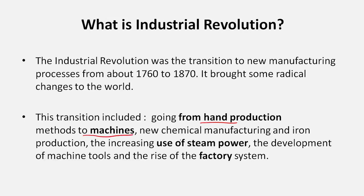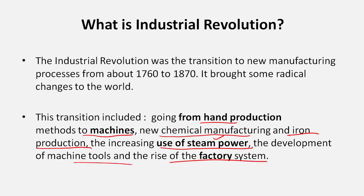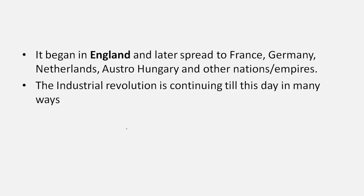During the Industrial Revolution, machines started to be used for production. New chemical manufacturing processes were started, new chemicals were developed, and science and technology took great strides. Iron production started commercially, there was an increase in the use of steam power, development of machine tools, and the rise of the factory system. These are the major characteristics of the Industrial Revolution.